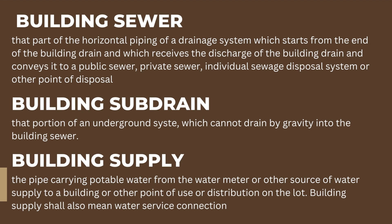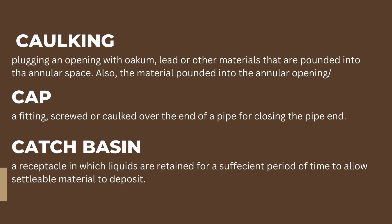Caulking: plugging an opening with oakum, lead, or other materials that are pounded into the annular space; also, the material pounded into the annular opening. Cap: a fitting screwed or caulked over the end of a pipe for closing the pipe end.